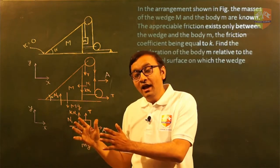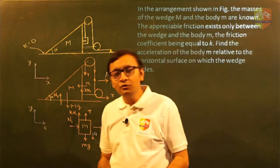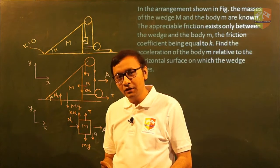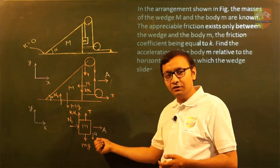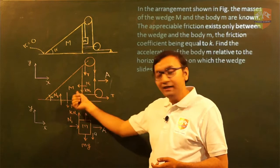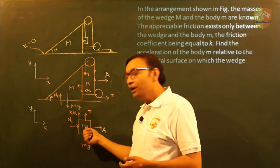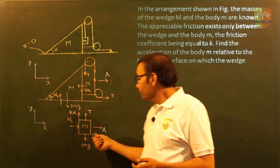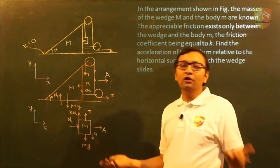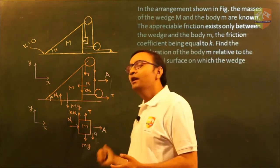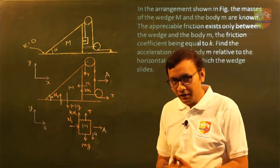Small m will have two accelerations. Let us call the acceleration of the wedge capital A. Then the acceleration of small m has one component downward — let us call this small a — and one component to the right-hand side — let us call that capital A.